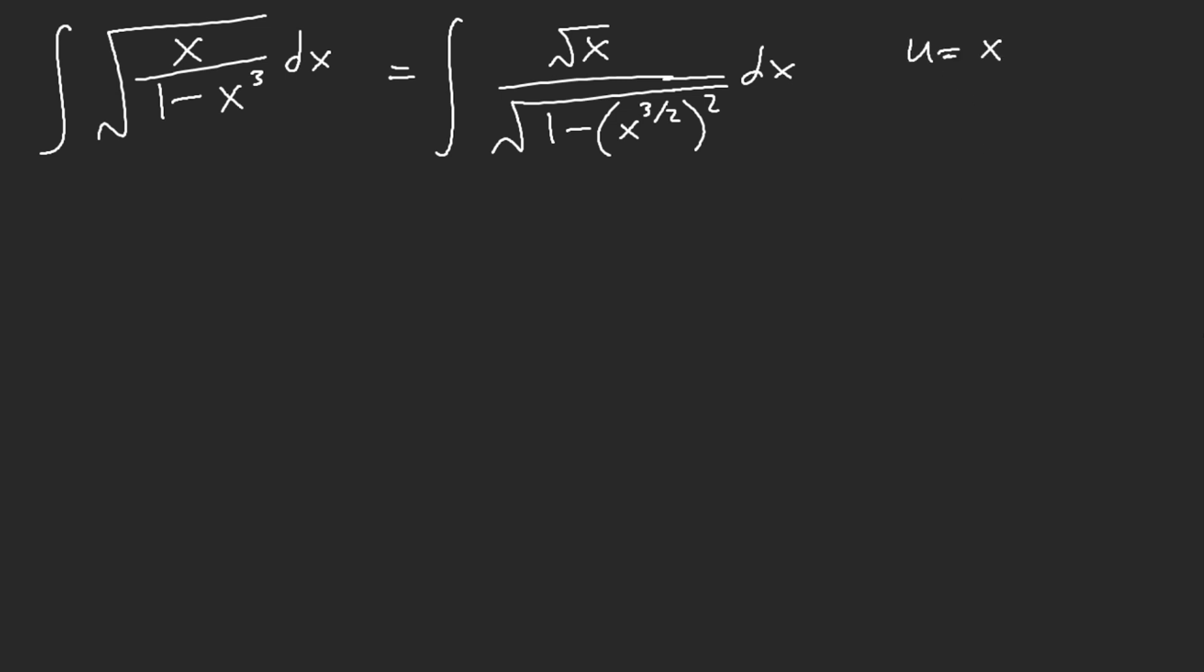Let u equal x to the power of 3 halves. Then du is 3 halves x to the 1 half. What is x to the 1 half? Square root of x. So this is 2 thirds of du over the square root of 1 minus u squared.